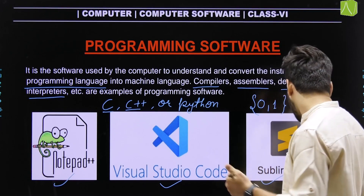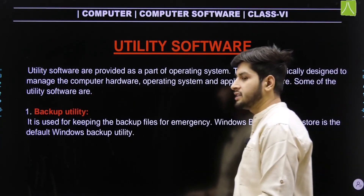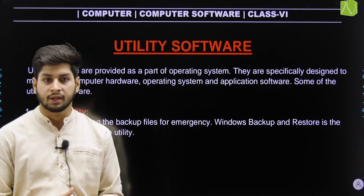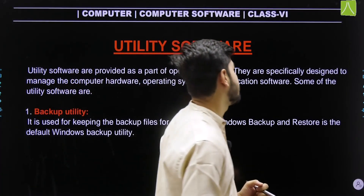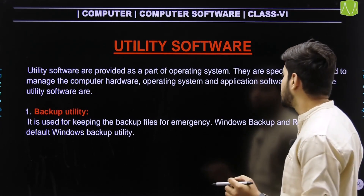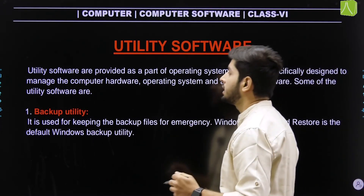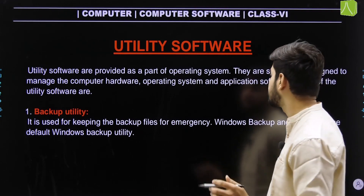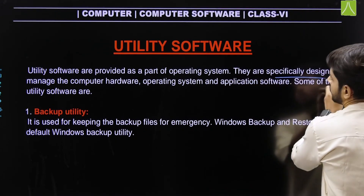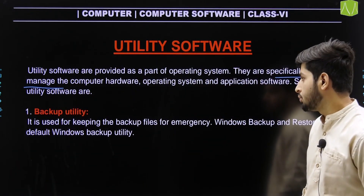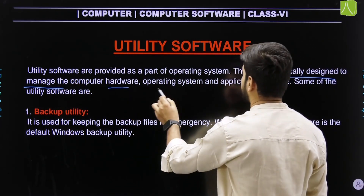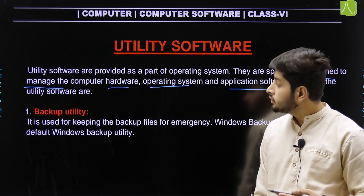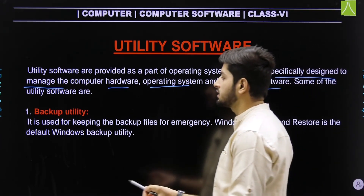Now, the next topic is utility software. Utility software is software which can control software and hardware devices. It helps the operating system manage the system. Utility software is part of the operating system and is specifically designed to manage computer hardware, the operating system, and application software. The first type is backup utility.